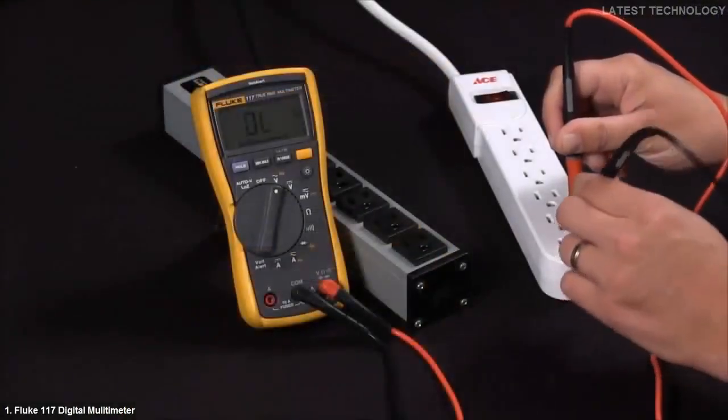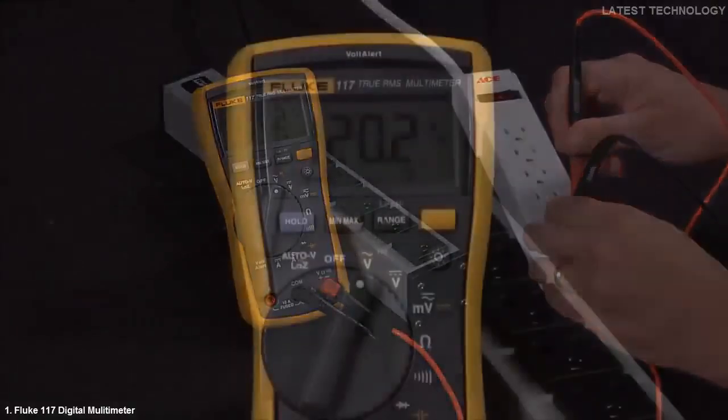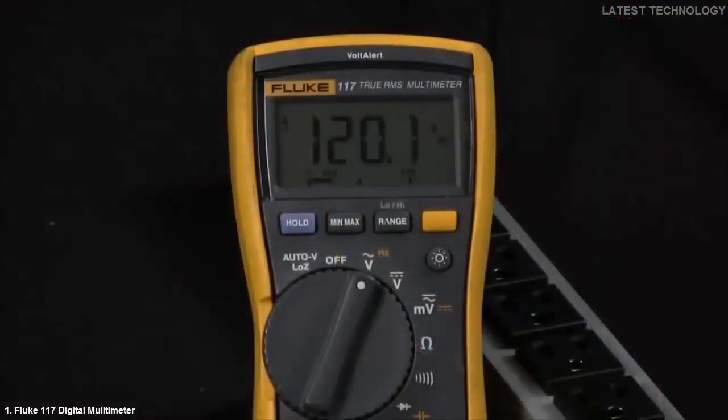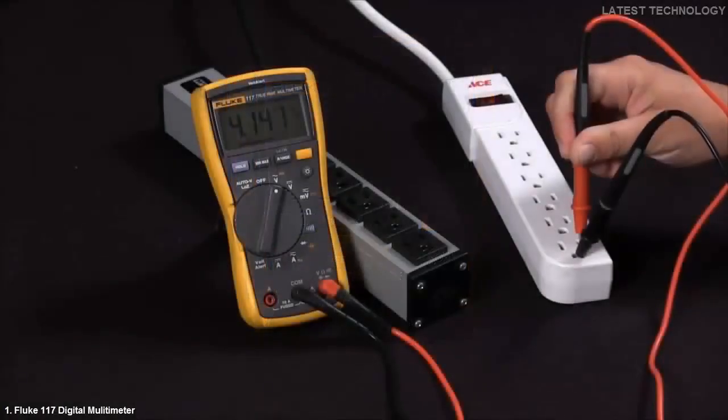Now, if I go ahead and remove that ground over to the neutral side, I'm getting 120 volts. If I go back to my ground to hot, I'm at four volts.